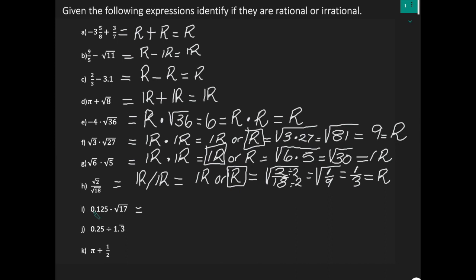For expression I, I have 0.125, which is a terminating decimal — therefore it is rational. I'm taking away the square root of 17; I can't take that in my head, so I know it is irrational. And a rational take away an irrational is irrational. For expression J, I have 0.25, which is a terminating decimal — all terminating decimals are rational. I'm dividing by another decimal that has a bar over the 3, meaning it has a repeating pattern: 1.3333... A decimal with a repeating pattern is rational. So a rational divided by a rational is rational.